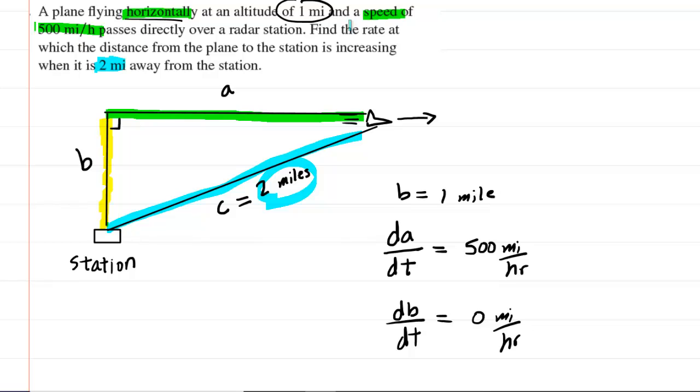we recognize the question wants to know the rate at which the distance from the plane to the station is increasing. Well, the distance between plane and station was represented by C. And if we're trying to find the rate at which that is changing, then we're actually looking for dc/dt.